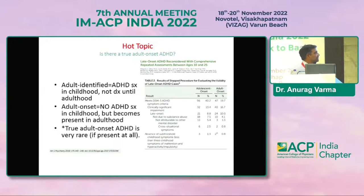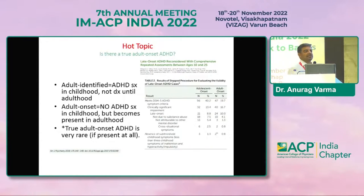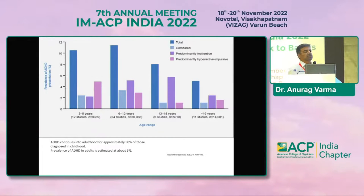If you look at this chart, most of the cases are spillover from childhood. There can be adult onset ADHD where we do not have any symptoms in childhood. And there can be a true adult onset ADHD where due to neurodegenerative conditions, symptoms of impulsivity and hyperactivity can arise de novo. ADHD is most prevalent between 6 to 12 years of age, and after that it gradually abates as we become adults.